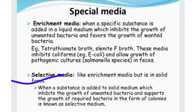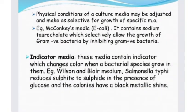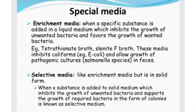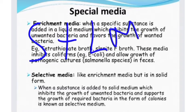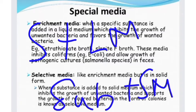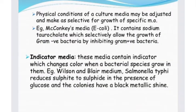Examples: MacConkey (MC) media is a selective medium — a solid medium. Indicator media uses a color change to identify bacterial growth. For example, in brilliant green medium, Salmonella typhi produces black colonies with a metallic shine due to sulfate reduction.